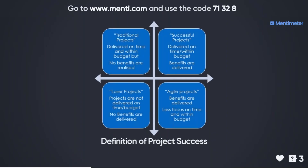These statistics come from different literature and research published in different sectors and areas, but the same issue persists — around only 30% of projects can be named as successful. There are four definitions of project success. The traditional one is to deliver on time and within budget, regardless of benefits. A very successful project delivers on time, within budget, within scope, AND delivers benefits. Loser projects are not delivered on time, over budget, and no benefits at all. The tricky ones — agile projects — deliver benefits but the focus is not on time or cost.